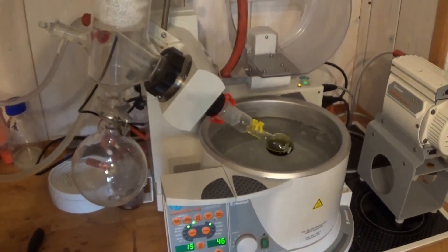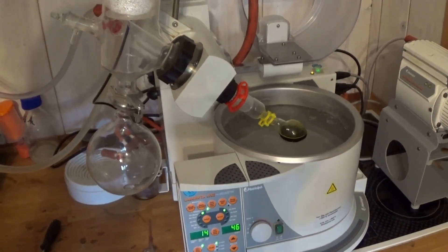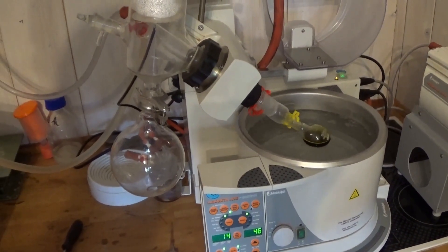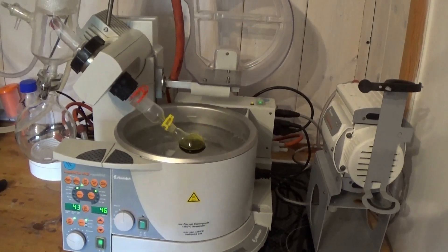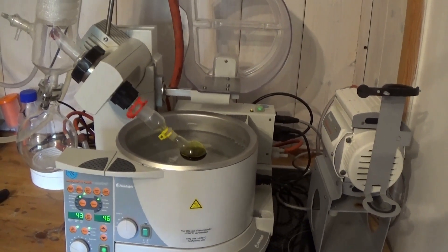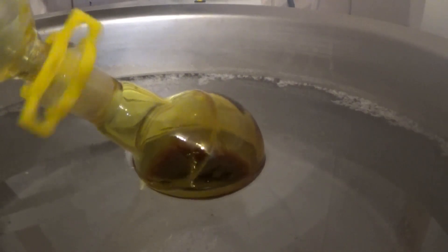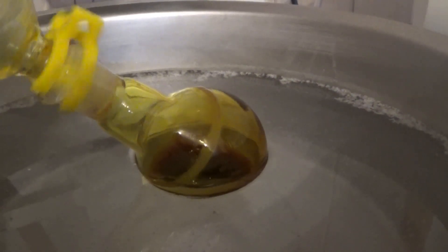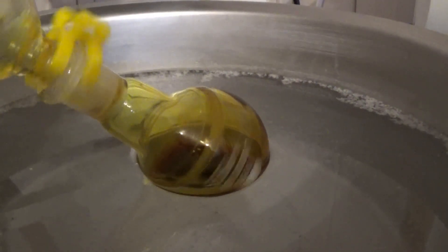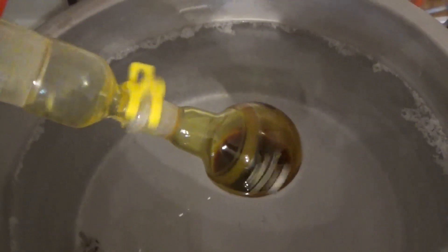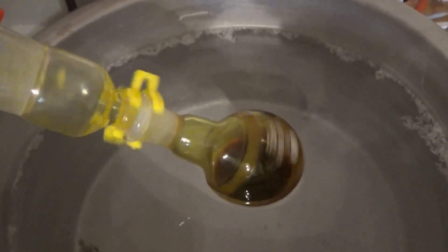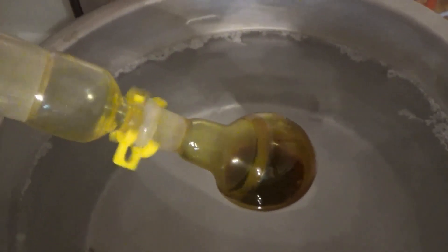I will explain the roti, that's how we call the rotational evaporator where I live, in another video. But for a short explanation, the whole system operates under vacuum and due to the spinning motion of the flask the surface of the liquid is increased drastically. This leads to a very simple and easy to operate distillation of solvents.